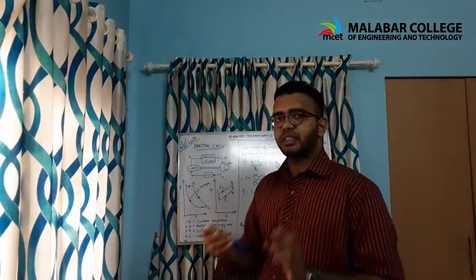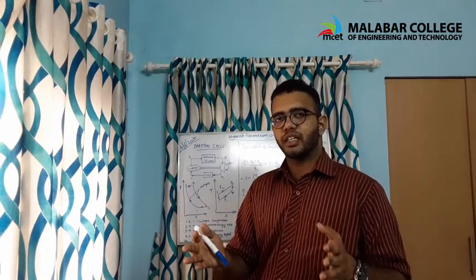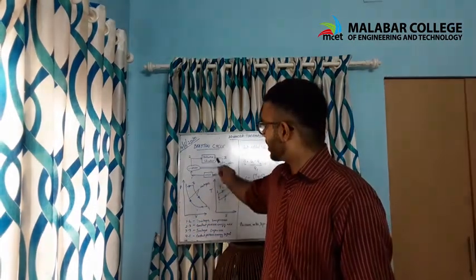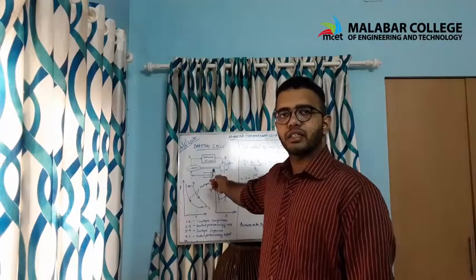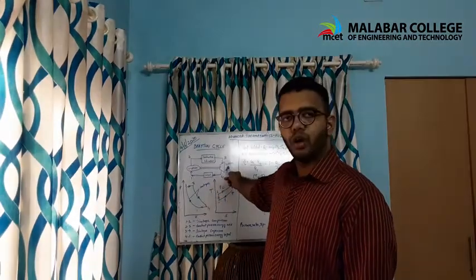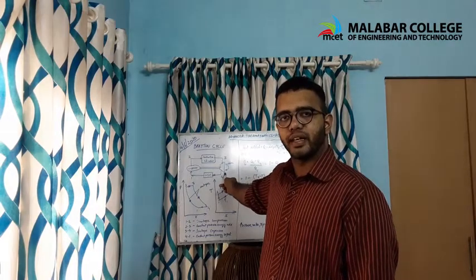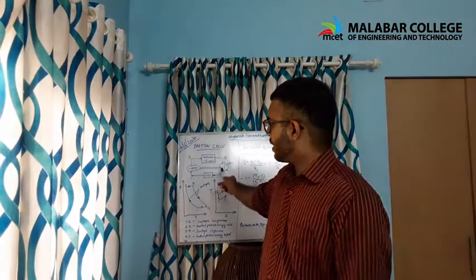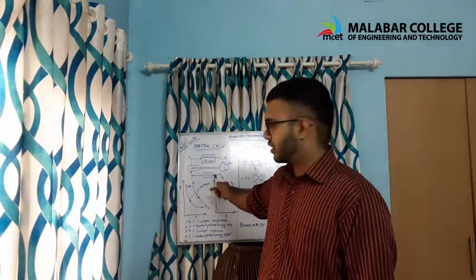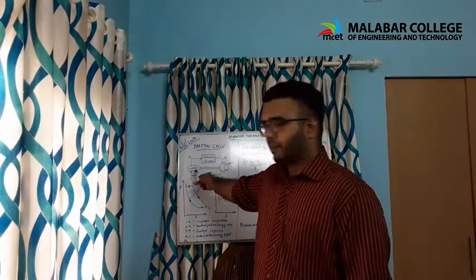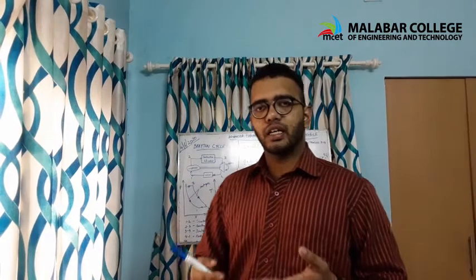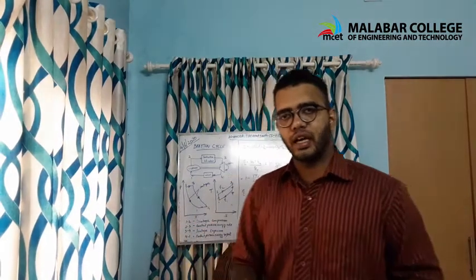Inside the compressor, air is compressed. The compressed air is then sent to the combustion chamber, where huge energy is released. Using this energy, the turbine is rotated. The work output is taken from the turbine, and a portion of the turbine's rotation is also used to drive the compressor.